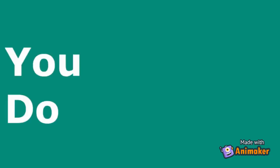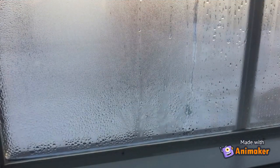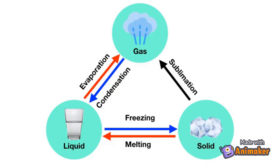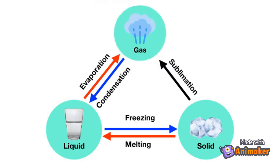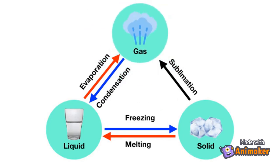Now it's time for you to practice on your own. On cold days, you sometimes see droplets of water form on your window. That's happening because water vapor in the air is turning back into a liquid on your window. That is an example of condensation.